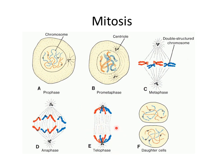Finally, during telophase, the chromosomes uncoil and lengthen, the nuclear envelope reforms, and the cytoplasm divides. Each daughter cell receives half of the doubled chromosomal material, thus maintaining the same number of chromosomes — 46 — as the mother cell.